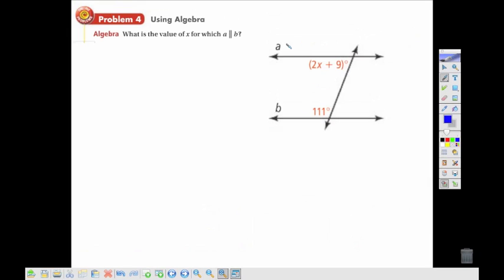For our final problem, we want to make the lines parallel. We don't know that they are, we want to make them parallel. In order for them to be parallel, we have to consider what has to be true about the relationship between these two angles. If we look at these two angles, they are same side interior. And if we remember our theorem, in order to be parallel, we need these to be supplementary.